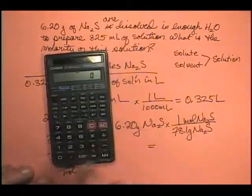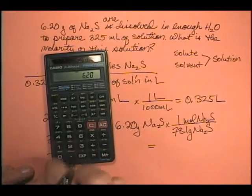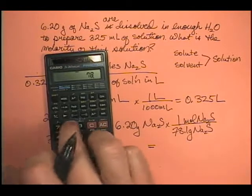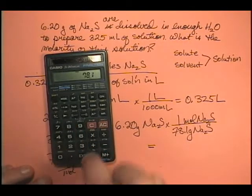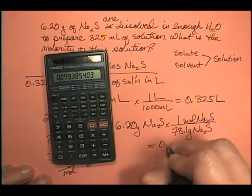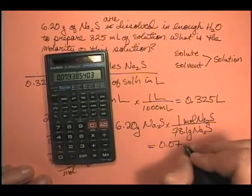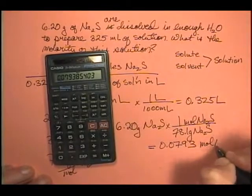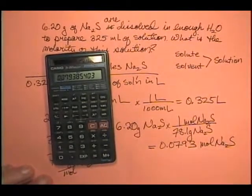So that's equal to, let's go ahead and calculate it. 6.20 divided by - not going to worry about multiplying by 1 - 78.1 equals 0.0793 moles of sodium sulfide.